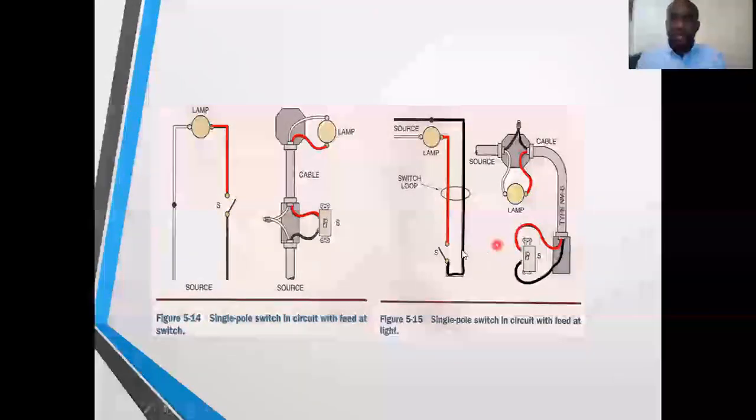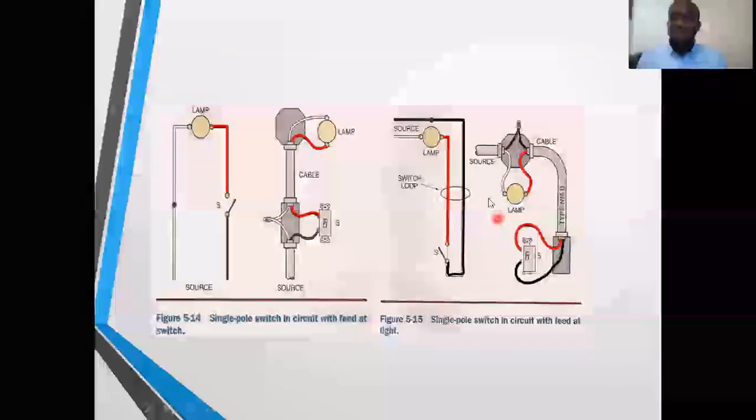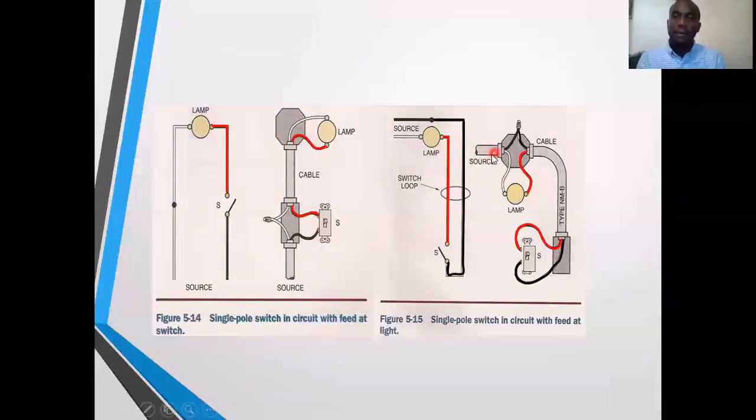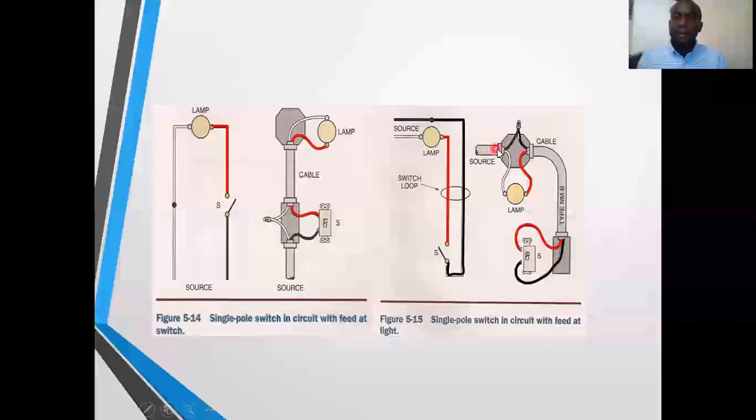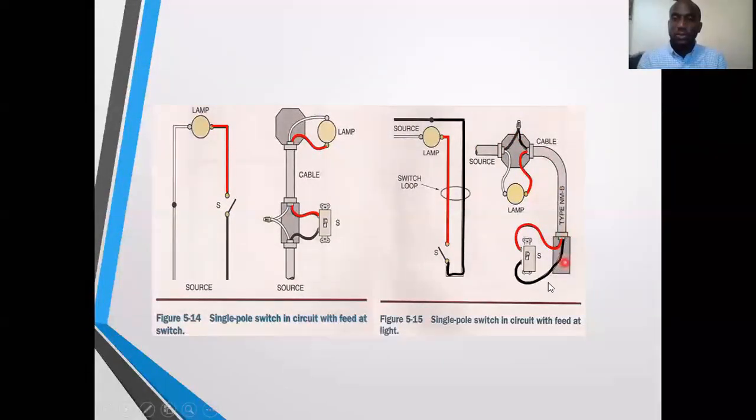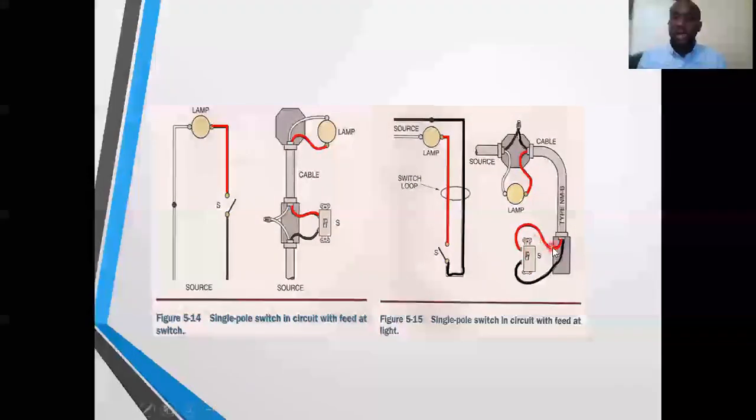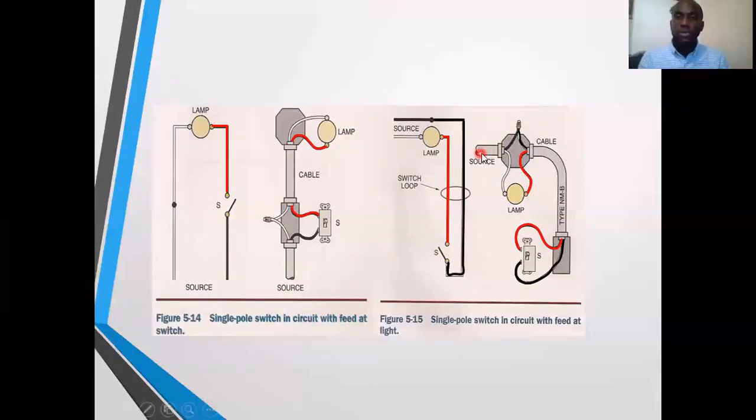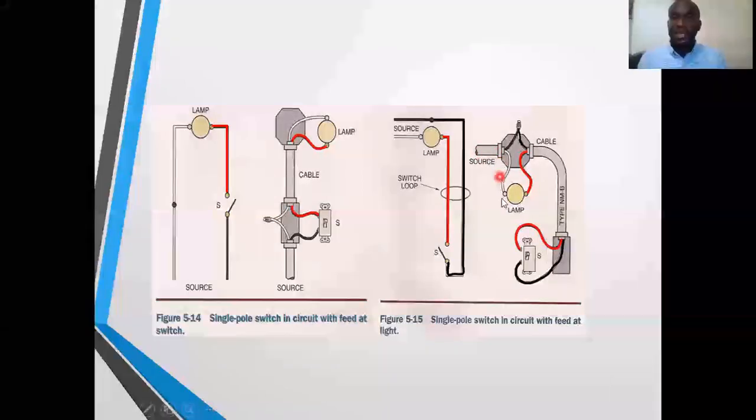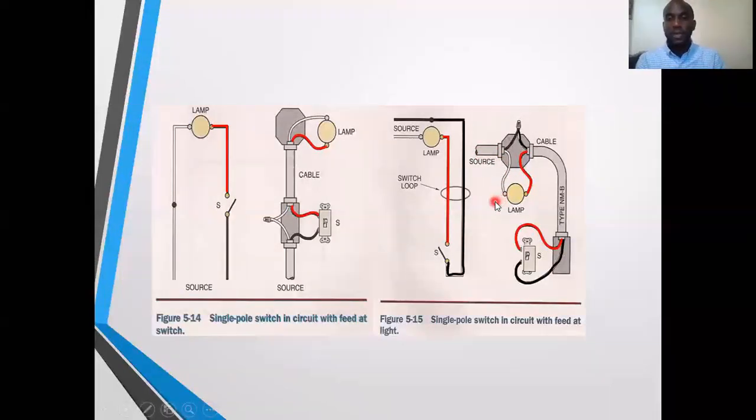At the lamp, we will bypass the lamp with the main black, send it to the switch. From the switch, we will take the red, tie it back to the lamp at the brass terminal. And of course, the source neutral goes directly onto the lamp.